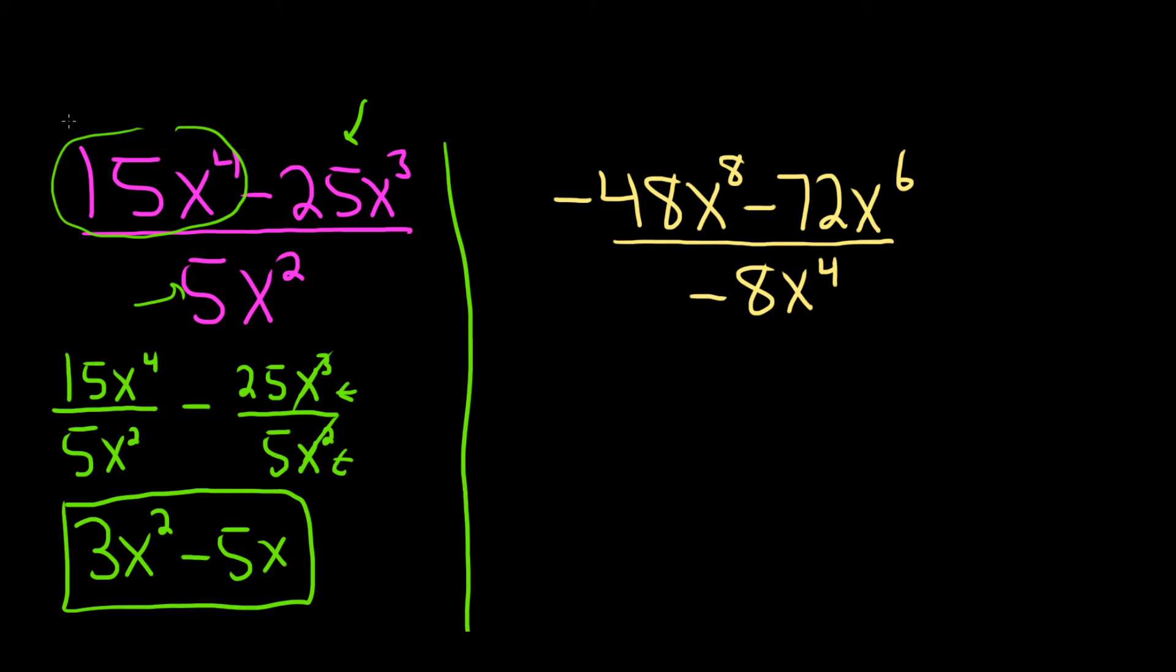Same thing over here. We're just going to break it up like we did before. So it's this piece here. So negative 48x to the eighth over negative 8x to the fourth. And then minus 72x to the sixth over negative 8x to the fourth.